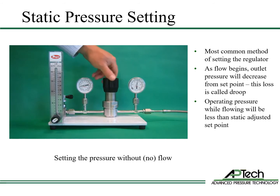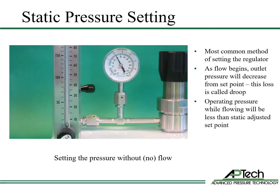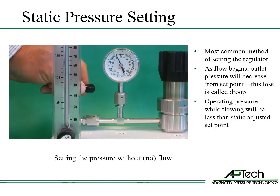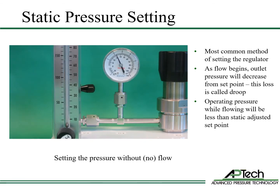Now we'll demonstrate two methods to set the outlet pressure. The most common method is static pressure setting, which means setting the pressure regulator with no flow. As flow begins, outlet pressure drops compared to the setpoint due to droop. When flow stops, the outlet pressure will rise slightly above setpoint due to creep or lockup. This is normal and will be explained in detail in later training.